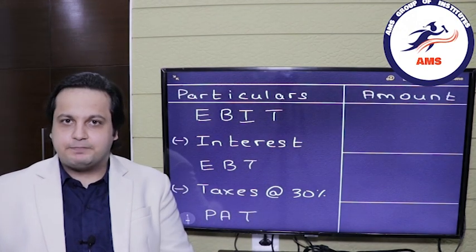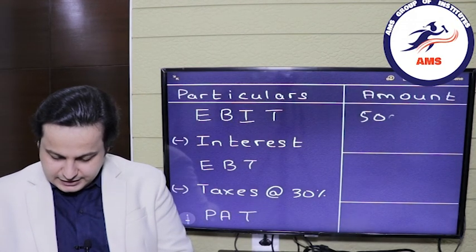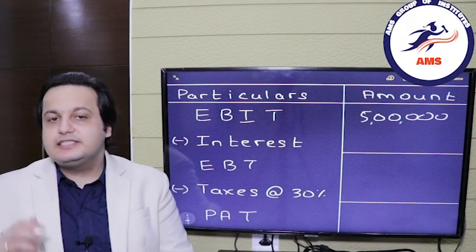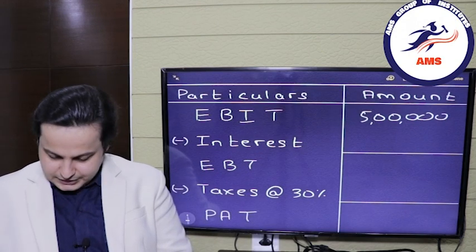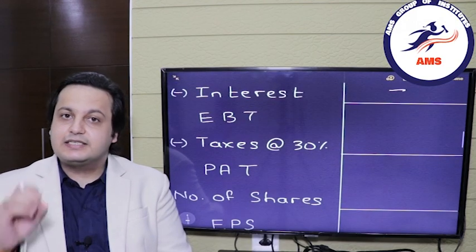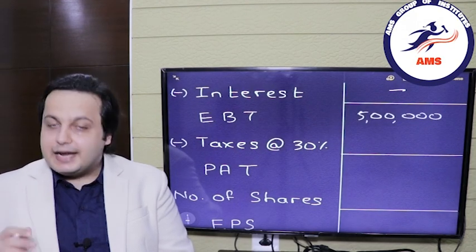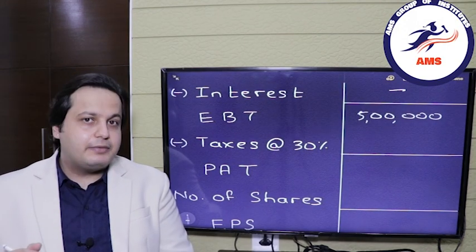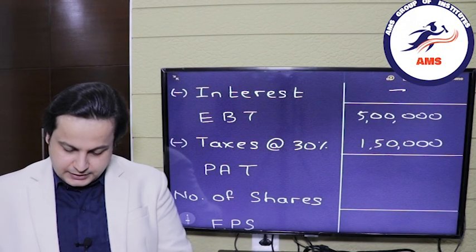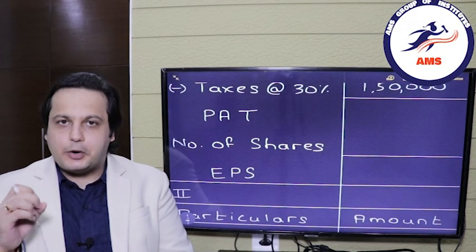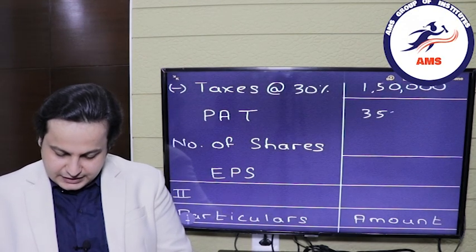Starting with the solution: the EBIT is 5 lakh rupees. In situation one, the interest will be zero because there is no debt involved. So the EBT — that is, earnings before tax — will also be 5 lakh rupees. Next, we calculate taxes at 30%, which comes out to rupees 1 lakh 50,000. After deducting tax, the profit after tax available for distribution to the shareholders will be rupees 3 lakh 50,000.